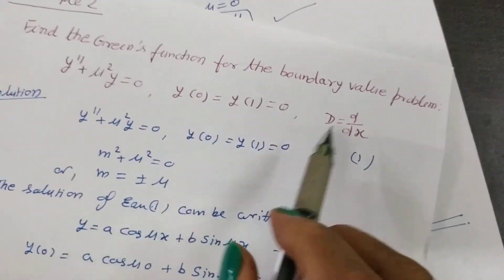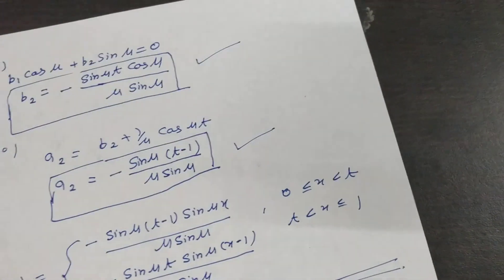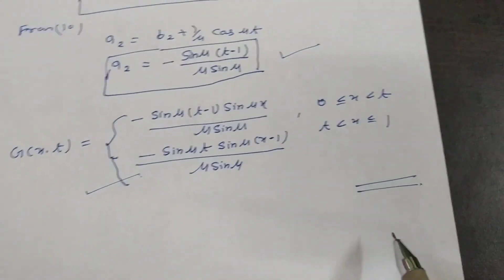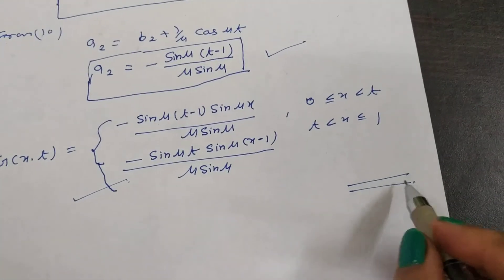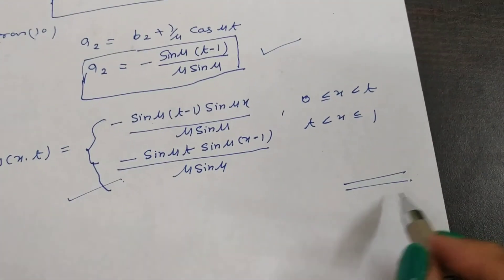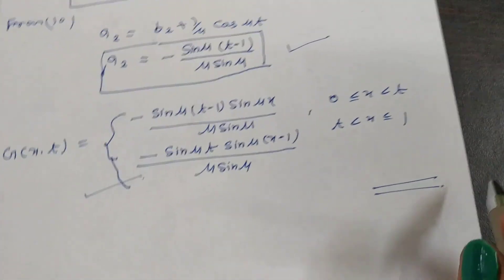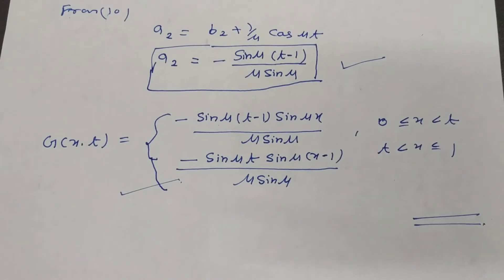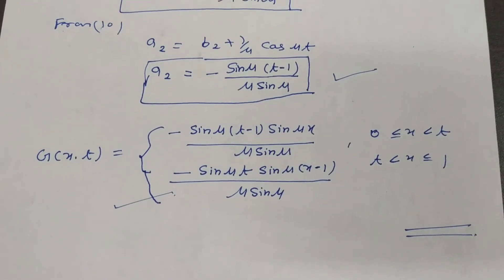This is the complete result. You get the Green's function for this boundary value problem. This is the required Green's function. In the next video I will also give another example. Thank you.